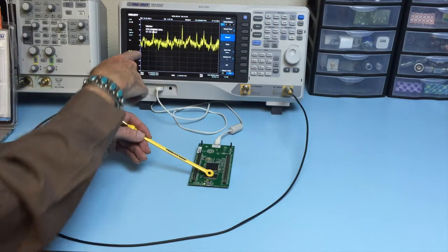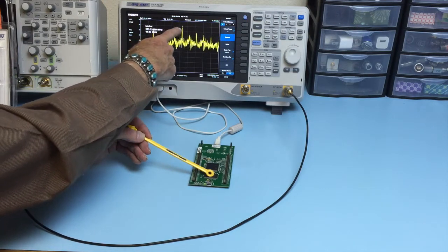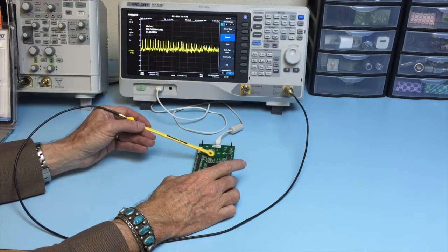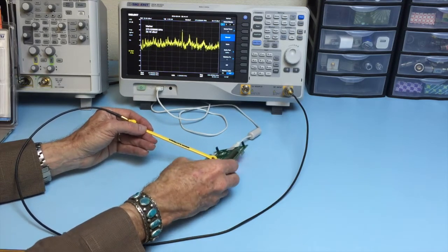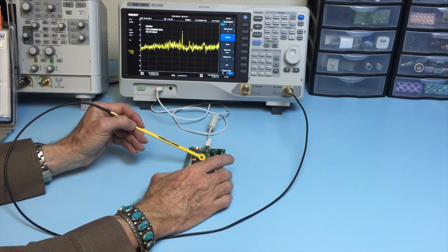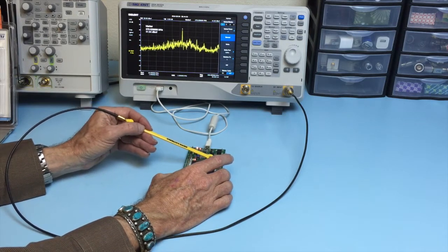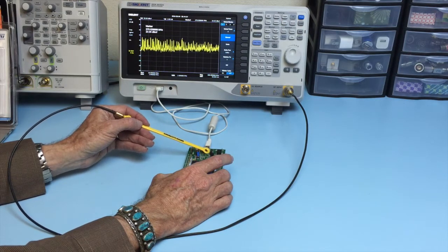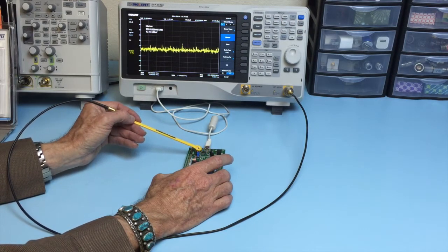So what I would do is record each frequency that's dominant and see whether there's any correlation between what I'm probing around on the board and where you might be failing the radiated emissions.